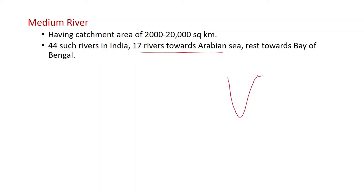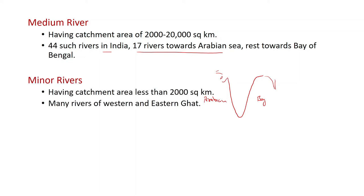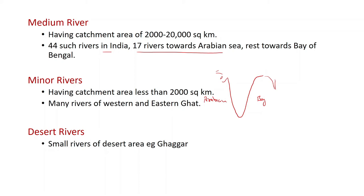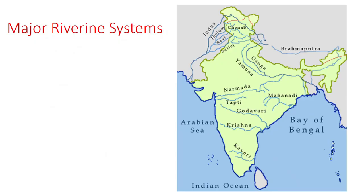Towards the eastern side of India we have the Bay of Bengal, and towards the western side we have the Arabian Sea. 17 rivers drain towards the Arabian Sea and the remaining drain towards the Bay of Bengal. Minor rivers have a catchment area of less than 2,000 km² and many rivers of the Western and Eastern Ghats comprise the minor rivers. Desert rivers are very small rivers of desert areas, for example the Ghaggar. These are the major riverine systems of India.